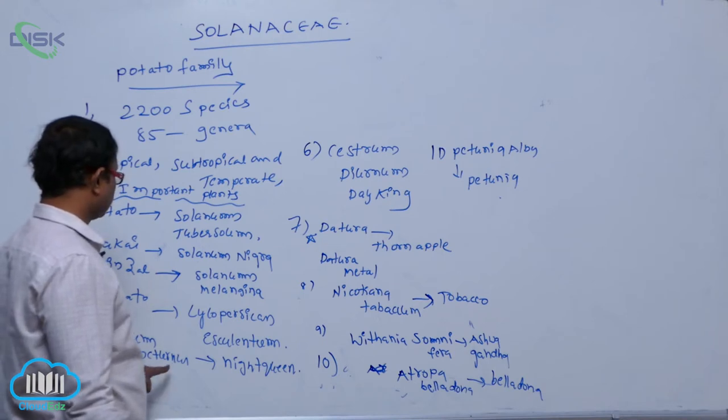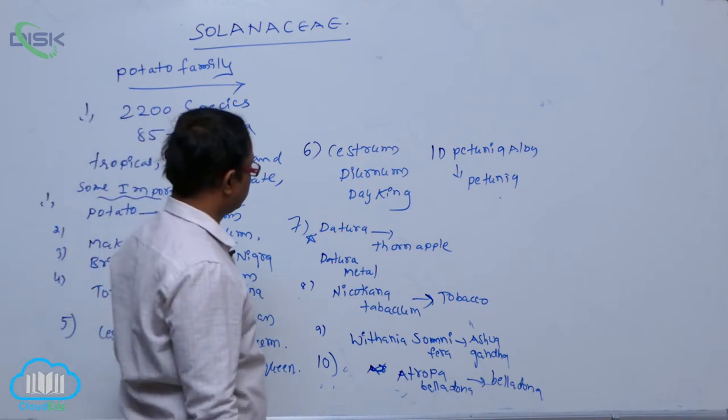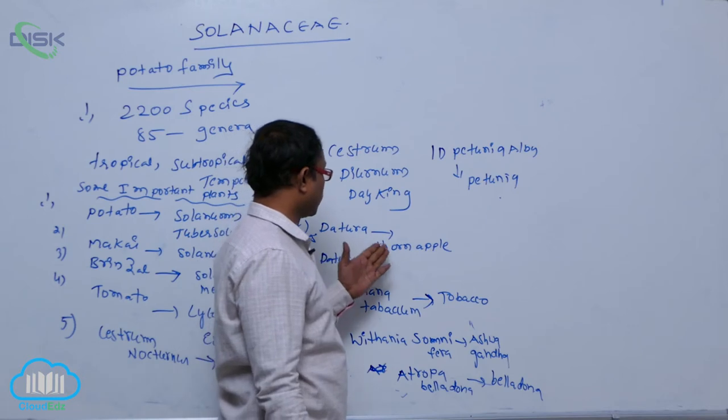Next is the Nocturnum, it is a Night Queen plant, it is an ornamental plant. Sistram Diarnam Day King, and Dathura Thornapil.